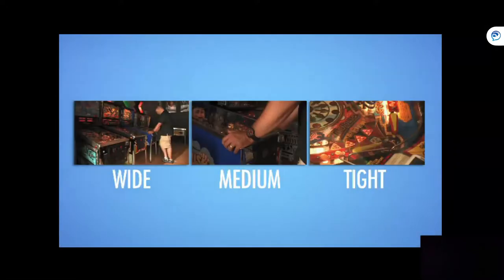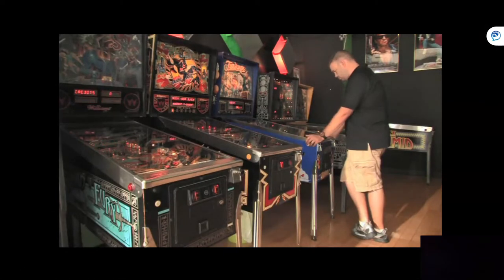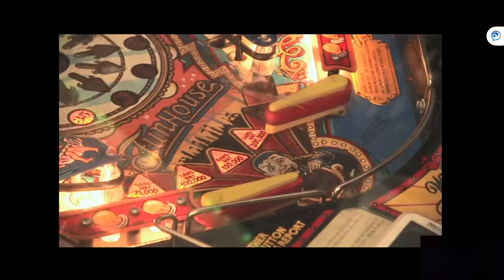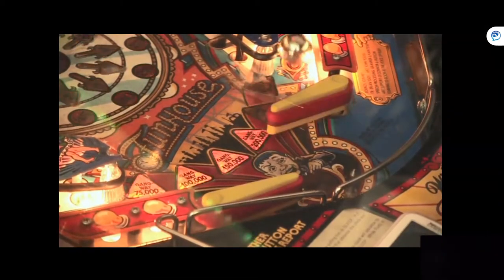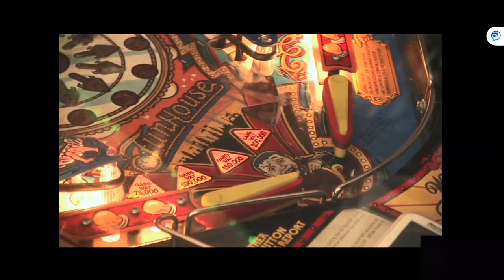The point to shooting wide, medium, and tight shots is to give yourself something to work with in the edit bay. When you shoot something, ask yourself: did I get a wide, a medium, and a tight of it? Wide, medium, and tight shots are so important because they're the building blocks of the subject of chapter three — sequences.